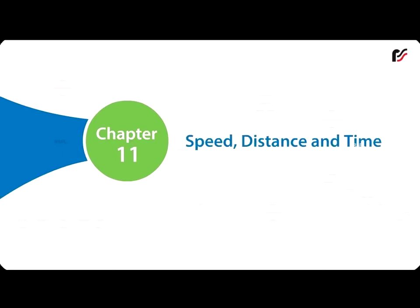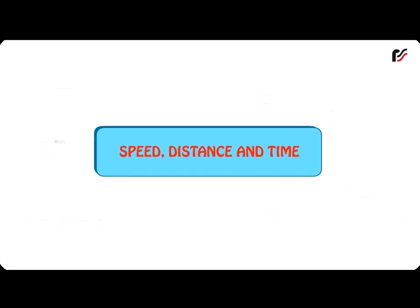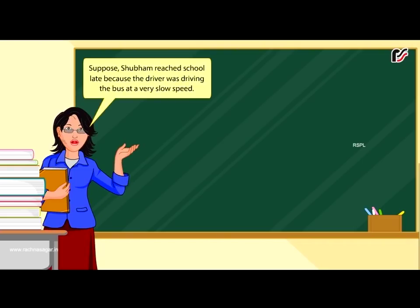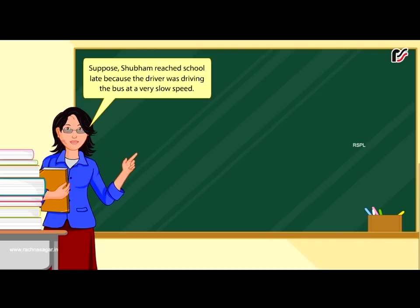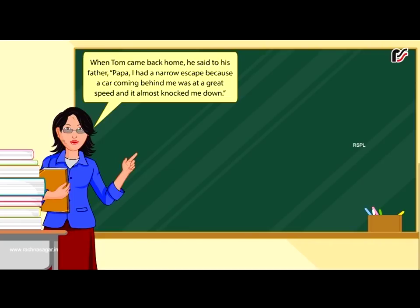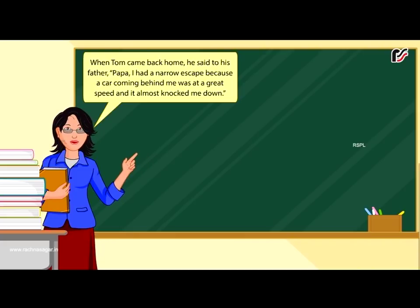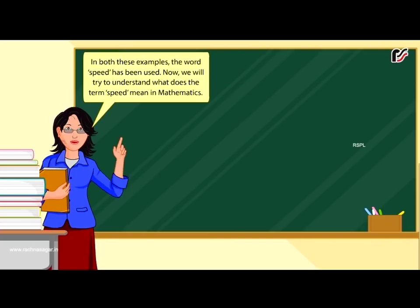Chapter 11: Speed, Distance and Time. Suppose Shubham reached school late because the driver was driving the bus at a very low speed. When Tom came back home, he said to his father, 'Papa, I had a narrow escape because a car coming behind me was at a great speed and it almost knocked me down.' In both these examples, the word speed has been used. Now we will try to understand what the term speed means in mathematics.